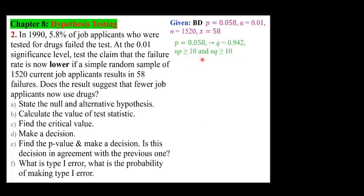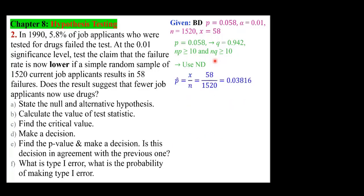The product of N·P and N·Q — if they are large (some texts use 5, others use 10, and both values are way larger than 10 in this case) — means we can use the normal distribution. We also need to calculate P-hat, which is X over N. This is the test statistic for proportion: Z equals P-hat minus P over the square root of PQ over N.